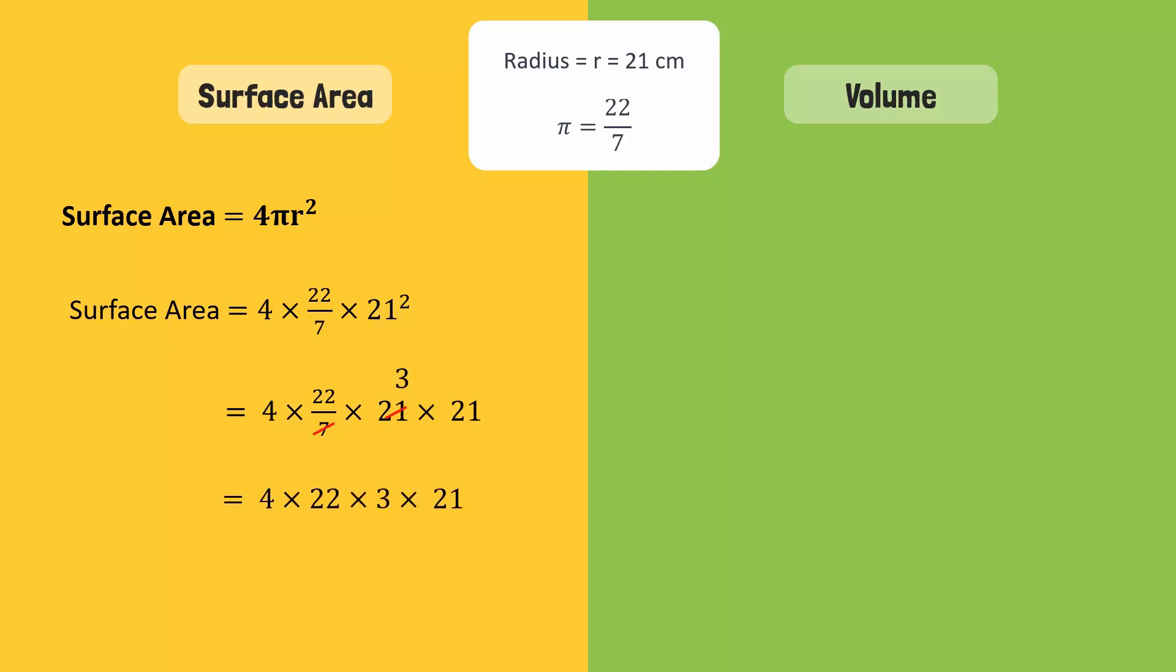We are left with 4 times 22 times 3 times 21, which is equal to 5544 square centimetres. Hence, Sara needs 5544 square centimetres of wrapping paper to cover the basketball. That was quick.